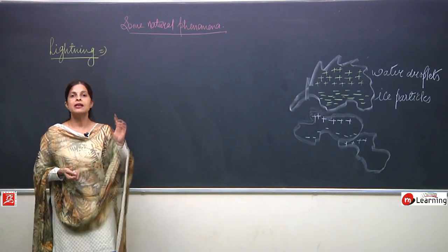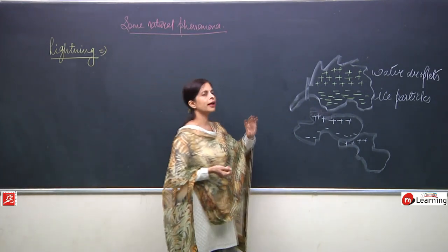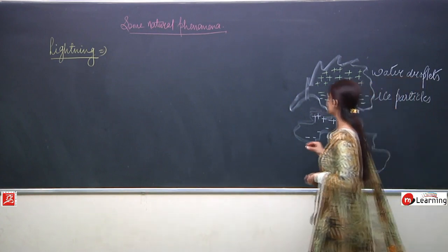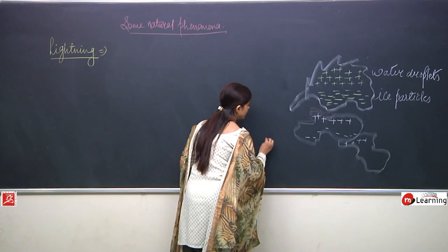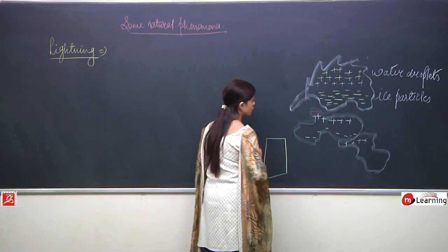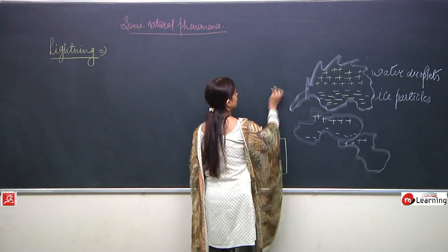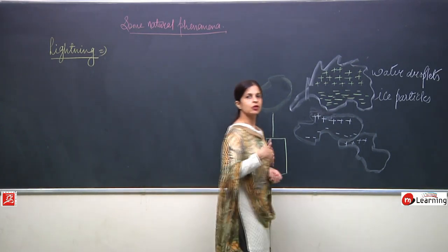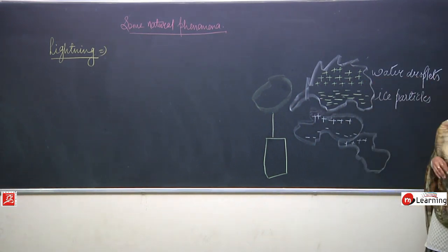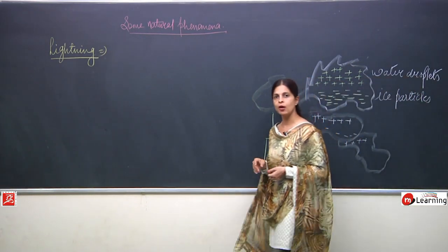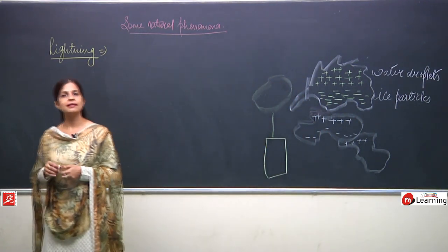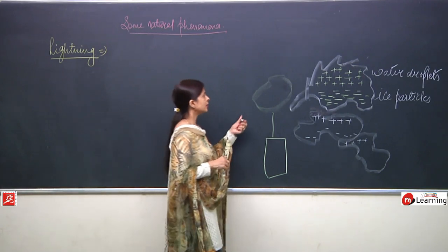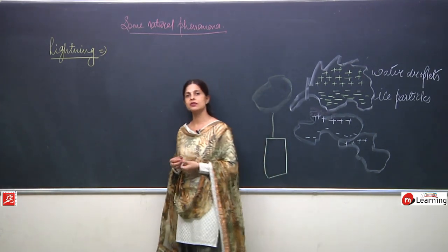Why should we stay away from tall objects? When a building is very tall, the distance between the cloud and the building decreases. Similarly for tall towers and other tall objects, the distance between the cloud and the object gets decreased. Whenever this distance decreases, the flow of charges becomes very easy — the charge can flow very easily because the distance is short.